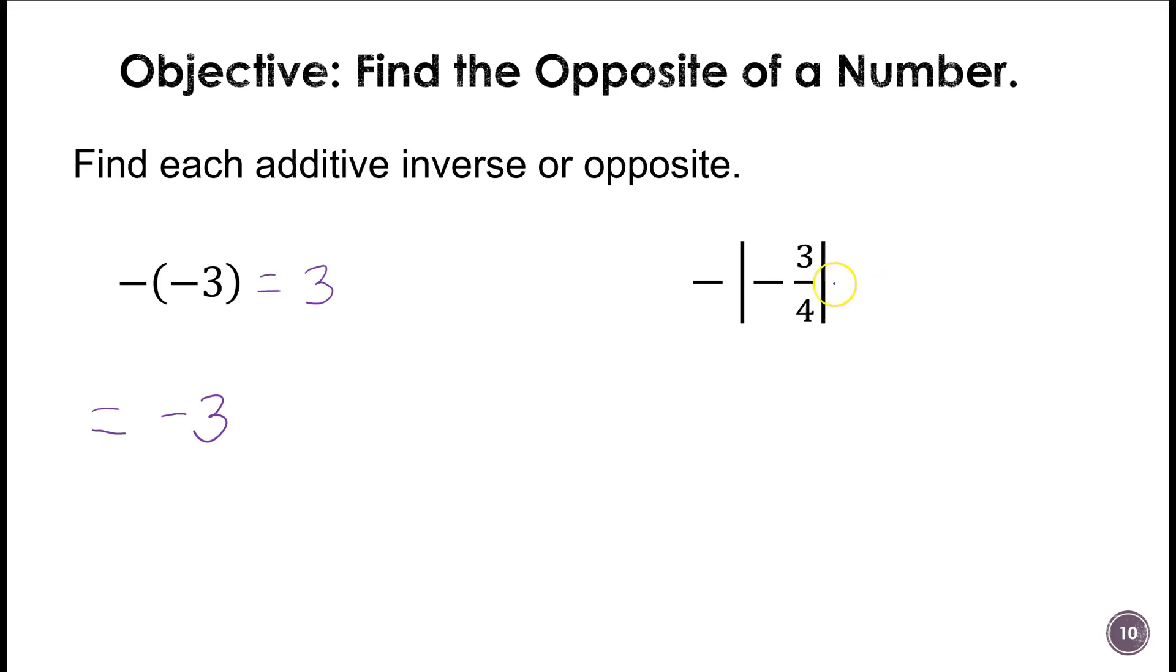Now, on this one, if we simplify it, it's going to be the absolute value of negative 3 fourths is 3 fourths, but notice we have a negative on the outside. When it's absolute value, we don't treat it the same way we did on the double negative on the 3 because that had parentheses.